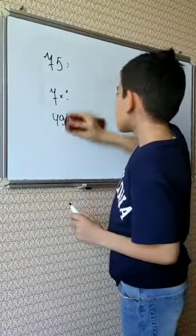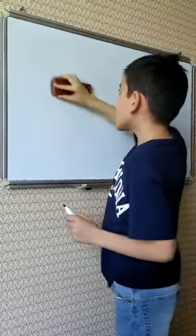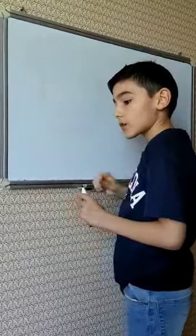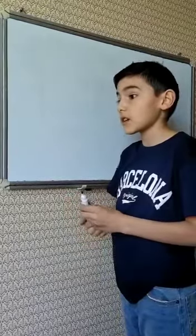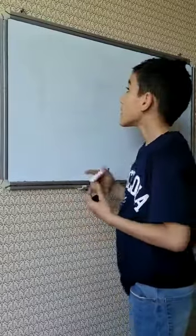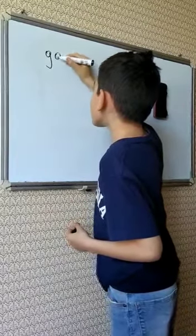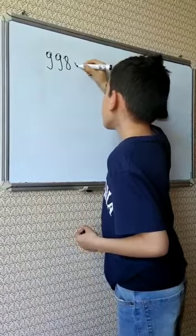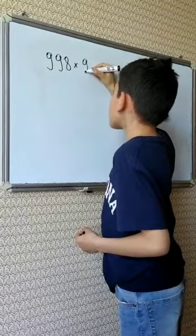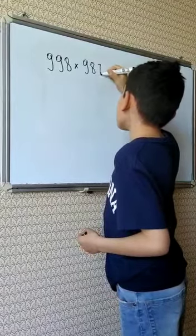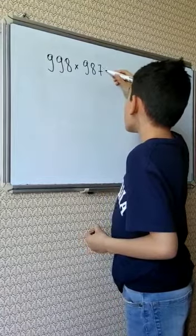Let's multiply three digit numbers that are not ending with 5 but they are close to 1000. For example, 998 multiplied by 987.